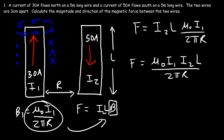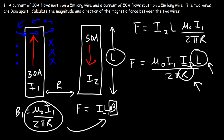Some books may use the same formula but with different letters, so make sure you understand what each variable represents. In this video, r is the distance between the two wires and capital L is the length of the wire. Your textbook might use different letters with different meanings, so make sure you understand what those variables are.